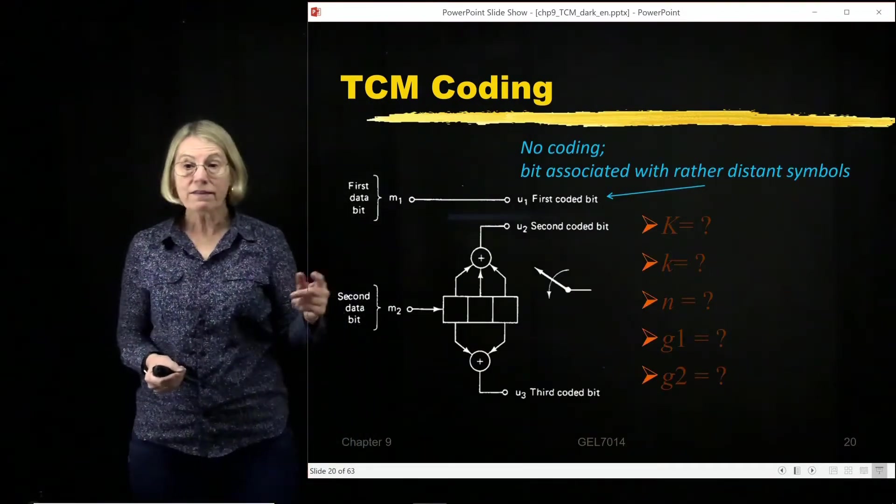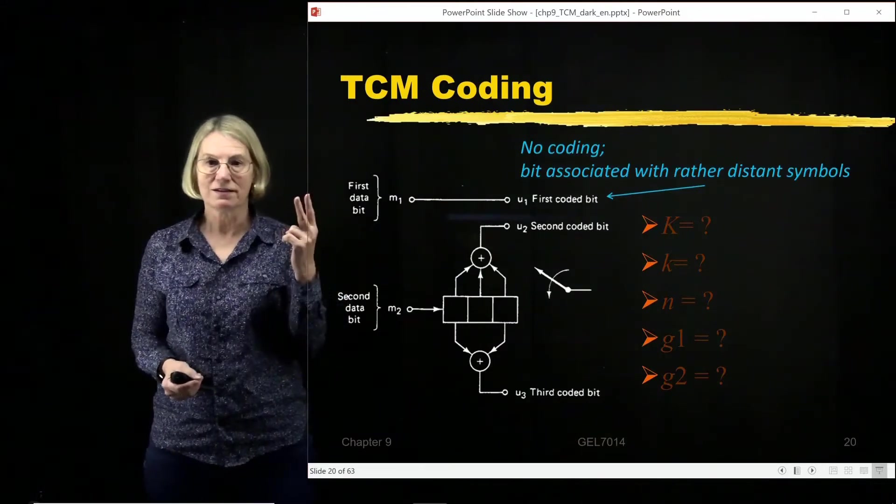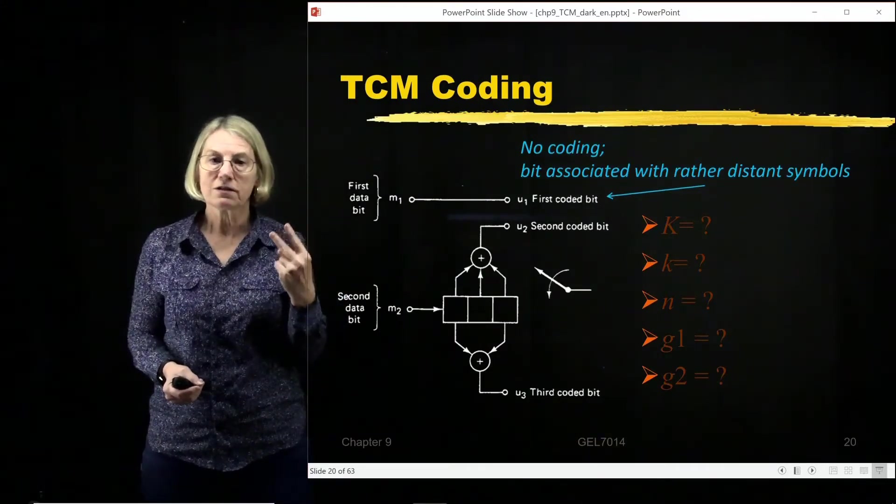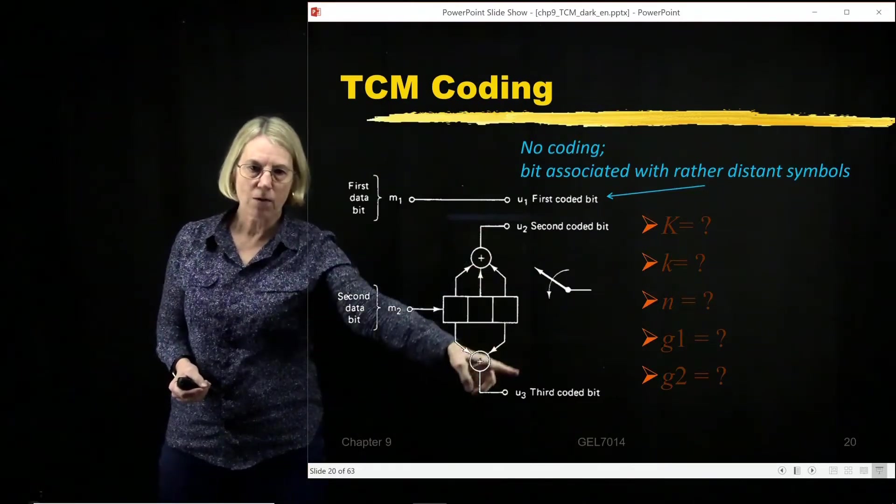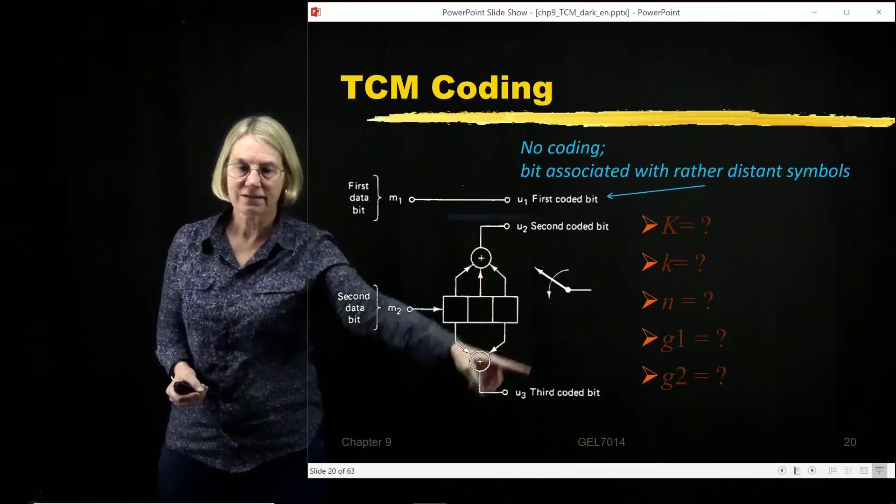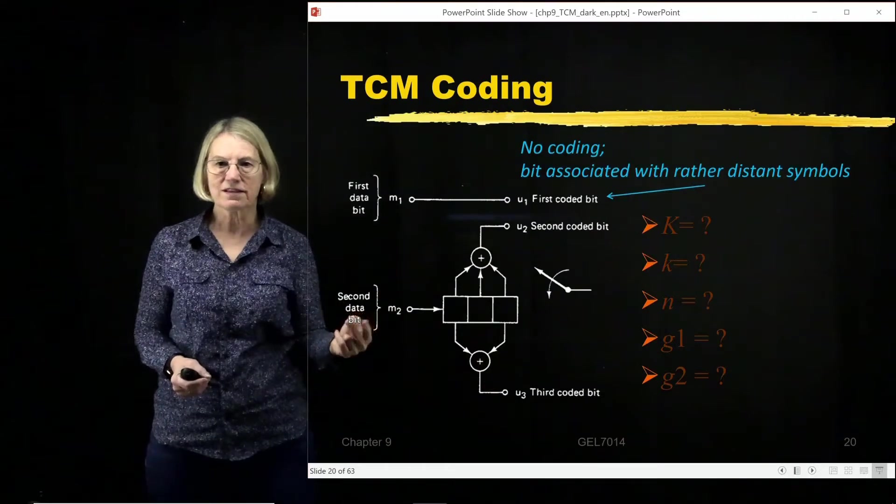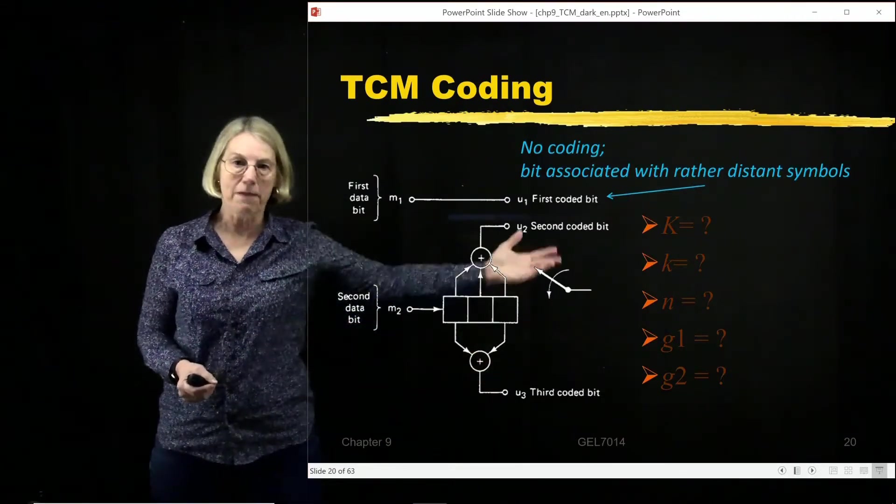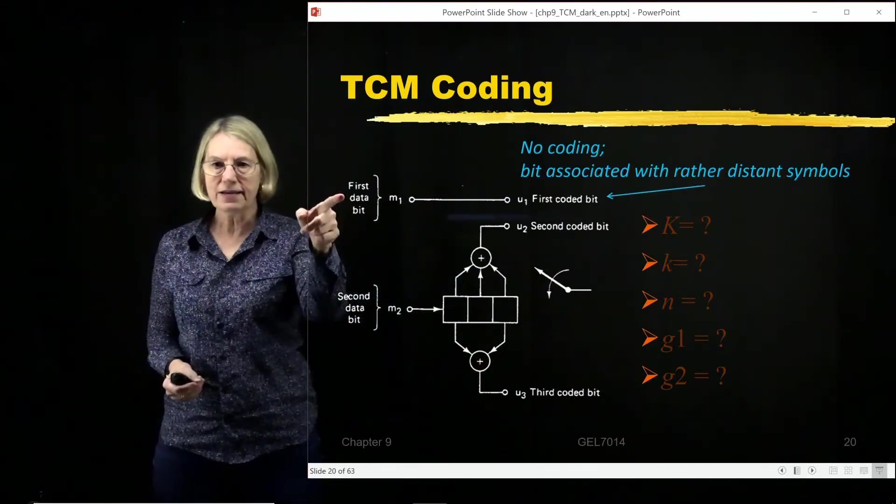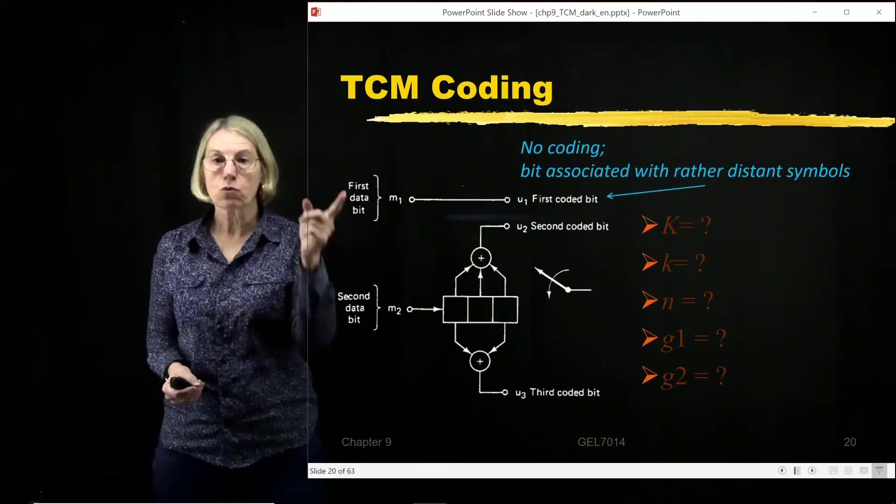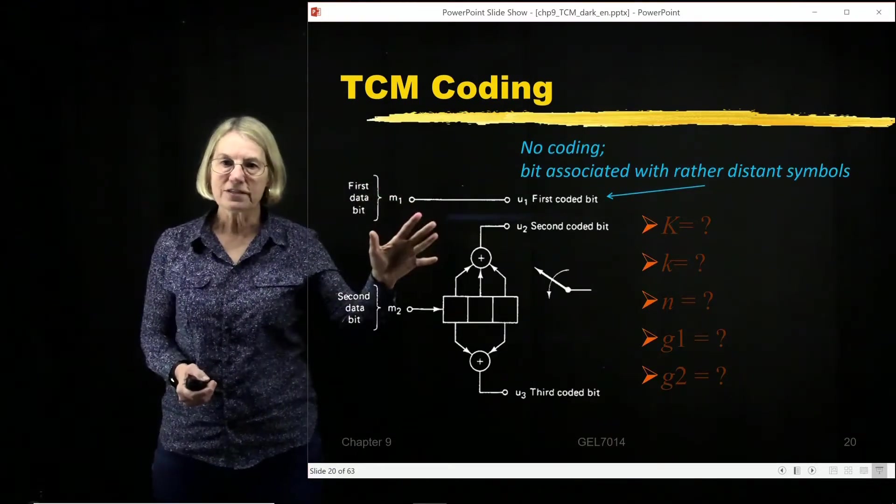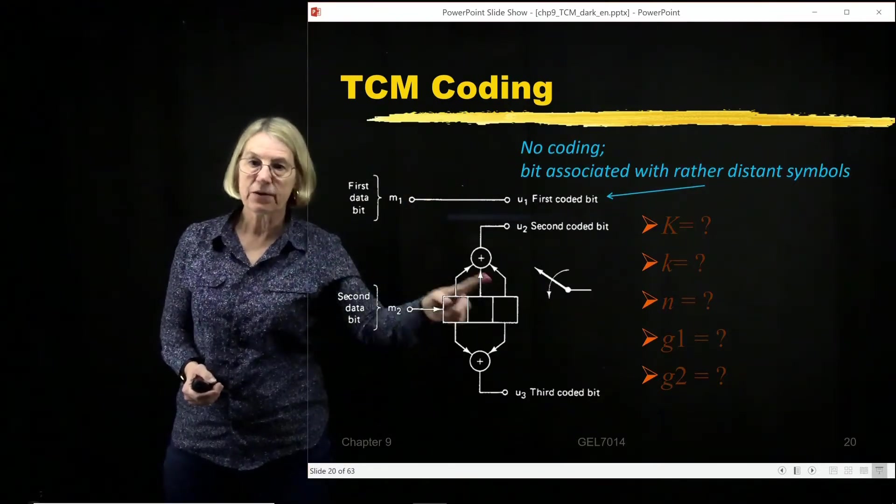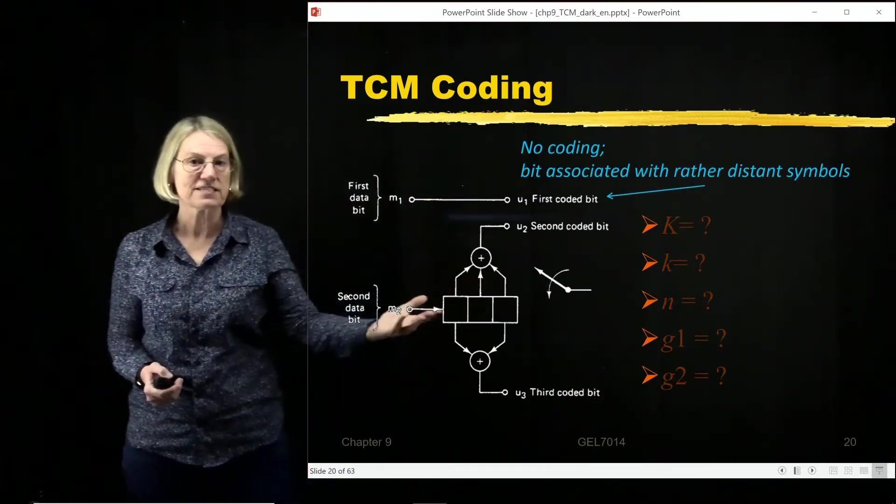So the other two bits are going to be the result of a convolutional code. Here, there's two outputs. I'm going to output two bits. Those are the two bits that are the remaining two bits in the 8-PAM. So in, I've got two real data bits. And at the output, it's like I have a sequence of three bits, so I have a different symbol.